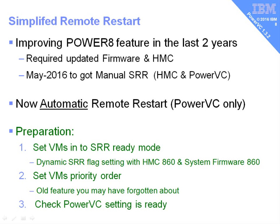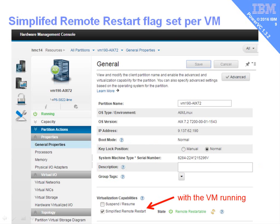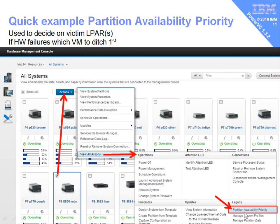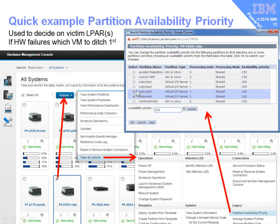There are a couple of preparation steps. First, virtual machines have to be put into SR ready mode. On 860 firmware and HMC we can do that dynamically; on earlier HMCs we had to stop the virtual machine first, which was a pain. Second, virtual machines have to be put into priority order — this is an older feature. On HMC 860 we go to the Enhanced Plus graphical user interface, find simplified remote restart, and click it. Then we set partition availability priority: select a machine, hit Actions, View All Actions, and find partition availability priority.